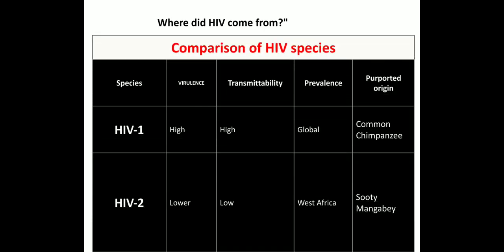Comparing both species, HIV-1 has got a high virulence and transmissibility compared to HIV-2. HIV-1 has been isolated from the primate source, the common chimpanzee, scientifically called Pan troglodytes, and has a global distribution. HIV-2 has comparatively lower virulence and transmissibility and is supposed to have originated from the Sooty mangabeys and is predominantly localized in West African countries.